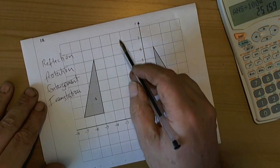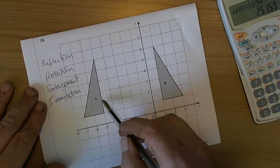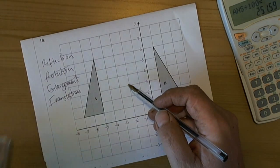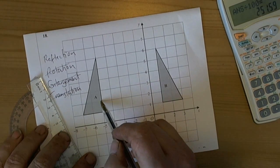Now, a reflection means that there should be a mirror line somewhere to change one shape into the other by flipping it over the mirror line, or reflecting it through the mirror line. Now, the mirror line's got to be halfway,